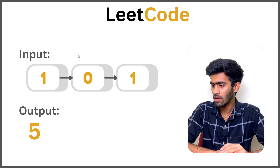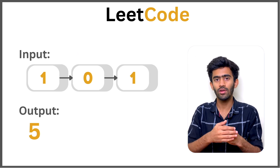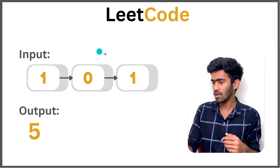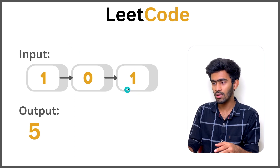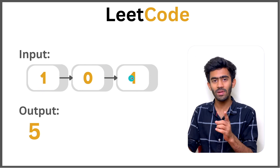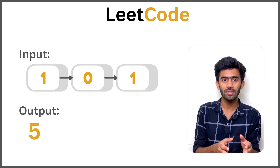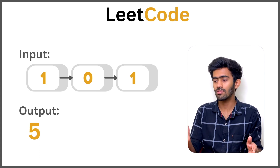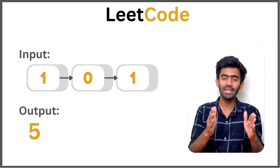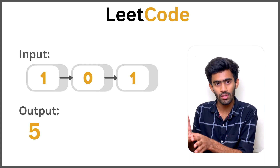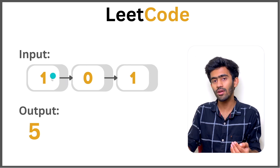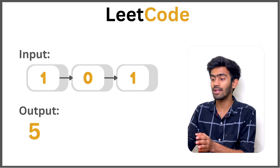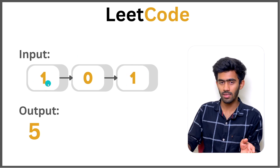Here we have an example with three nodes: 1, 0, and 1. The binary representation of 5 is 101, so our answer must be 5. To verify: the last digit is at 2 power 0, the middle at 2 power 1, and the first at 2 power 2. So 1×2² + 0×2¹ + 1×2⁰ equals 5. That is the standard binary to decimal conversion, and that is the exact logic we are going to use. The catch is we have the head node, not the tail, so we must start from the first node.